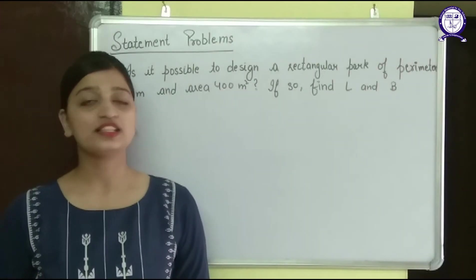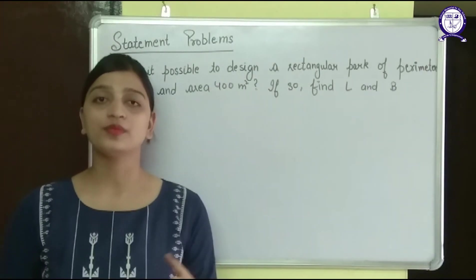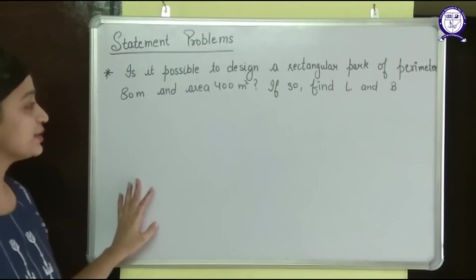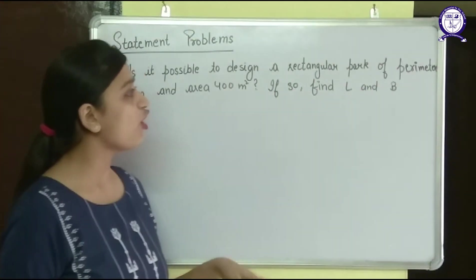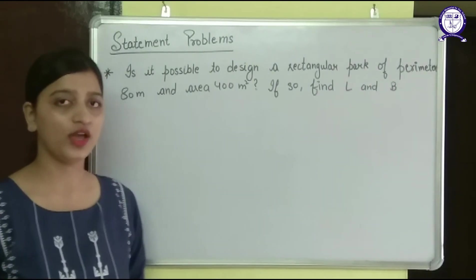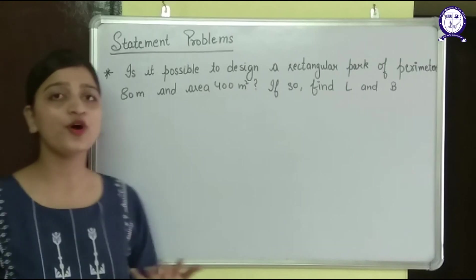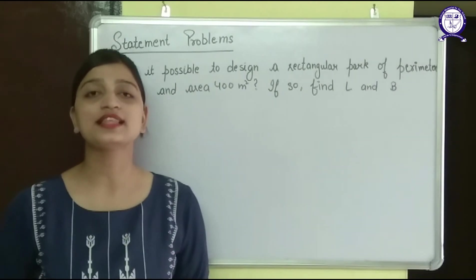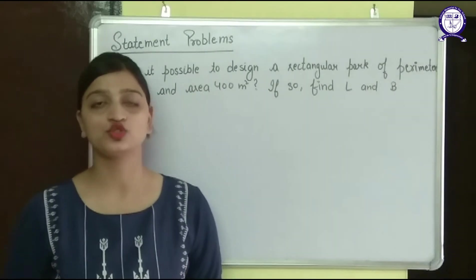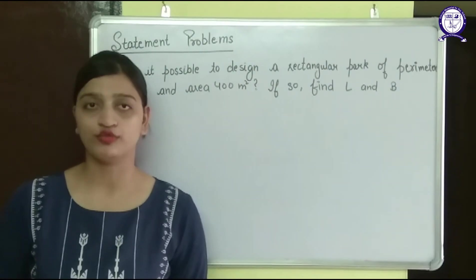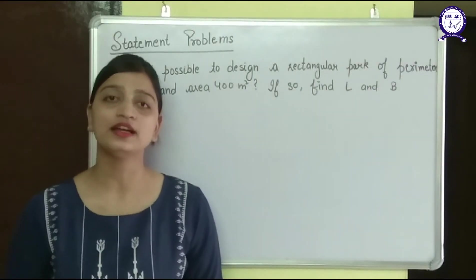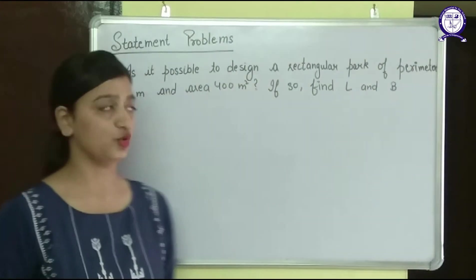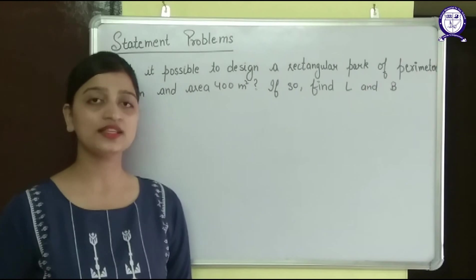In this chapter there are statement problems also, and problems related to nature of roots have a different form. The statement says: is it possible to design a rectangular path of a given perimeter and area? The question asks: is it possible? That means it is asking about the nature of roots. So first we will find the nature of roots, but we can only find that when we know the equation — so first we have to form the equation.